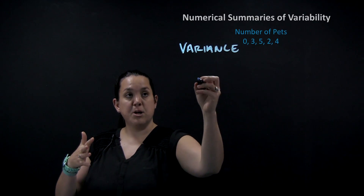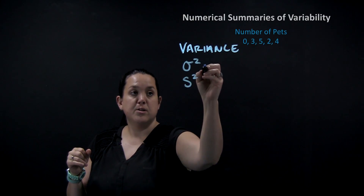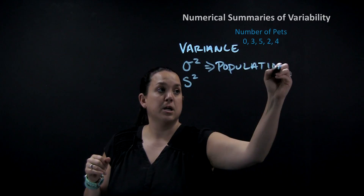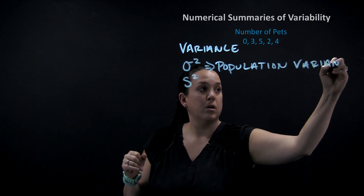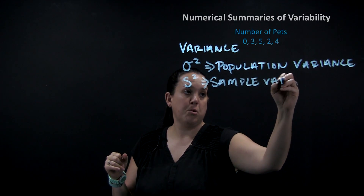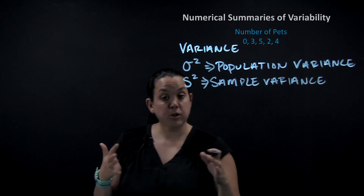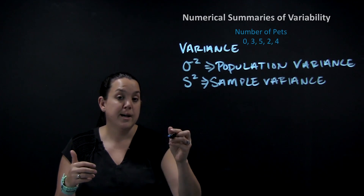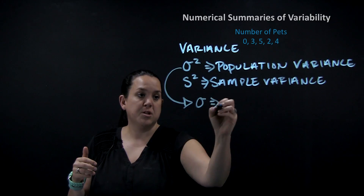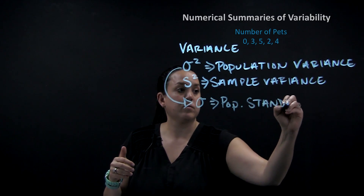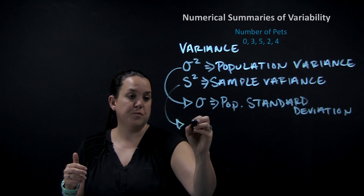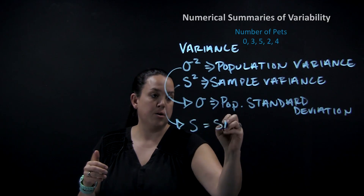Variance has two measurements — one for the population and one for the sample. The notation for population variance is sigma squared, and the notation for sample variance is s squared. For standard deviation, if we measure it for a population we take the square root so it's just sigma — that's population standard deviation. For a sample, we use the notation s, representing sample standard deviation.